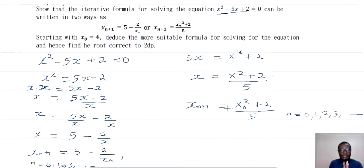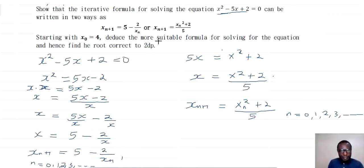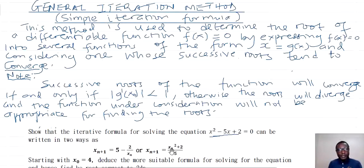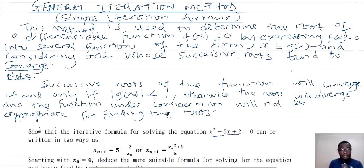We have now shown these two formulas. Next, we determine which converges and which diverges. The converging function is the appropriate one for finding the root. For a converging function, the magnitude of g'(x) evaluated at x₀ must be less than 1; otherwise it diverges.